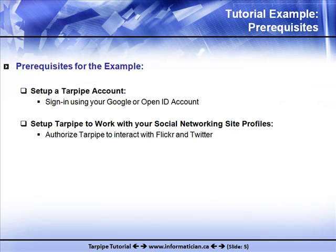Before you get started with this tutorial, I'm assuming that you've already set up a Tarpipe account. You can sign in using your Google ID or your OpenID. Once you've set up your Tarpipe account, you also need to authorize Tarpipe to interact with any other social networking sites you want to use. In this example we're going to use Flickr and Twitter, so I'm assuming you've given authorization for Tarpipe to interact with those services.